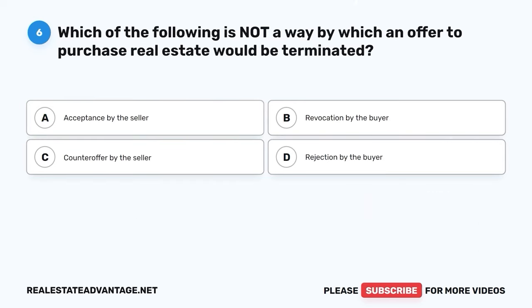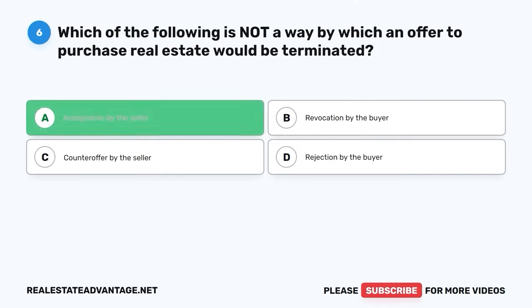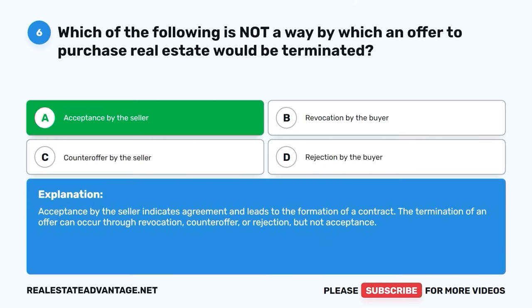Question 6. Which of the following is not a way by which an offer to purchase real estate would be terminated? A. Acceptance by the seller. B. Revocation by the buyer. C. Counteroffer by the seller. D. Rejection by the buyer. The correct answer is A: Acceptance by the seller. Acceptance by the seller indicates agreement and leads to the formation of a contract. The termination of an offer can occur through revocation, counteroffer, or rejection, but not acceptance.